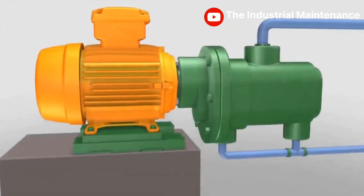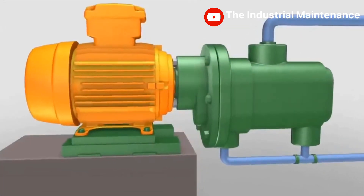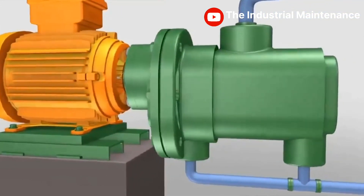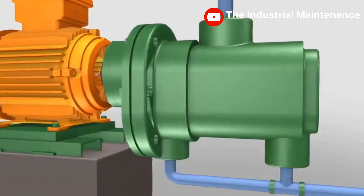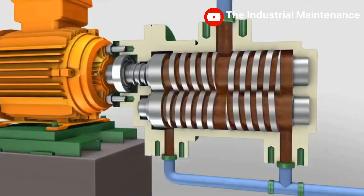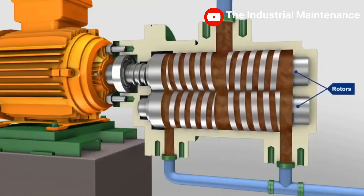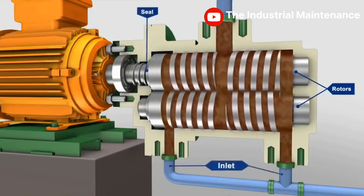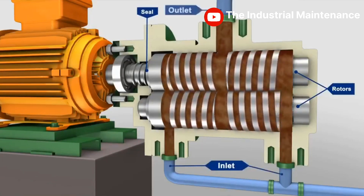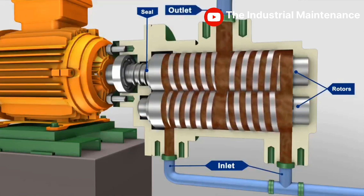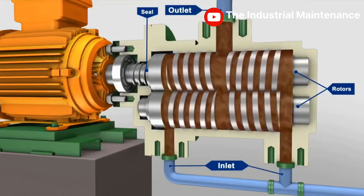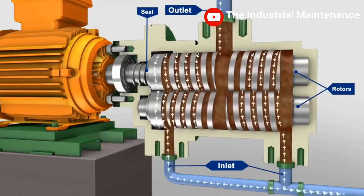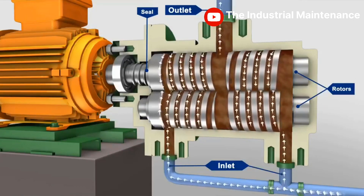In screw pumps, it is the intermeshing of the threads on the rotors and the close fit of the surrounding housing that creates one or more sets of moving seals in a series between the pump inlet and outlet. These sets of seals, or locks as they are sometimes referred to, act as a labyrinth and provide the screw pump with its positive pressure capability.